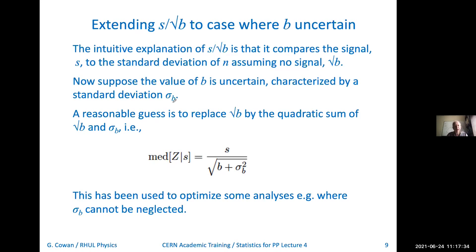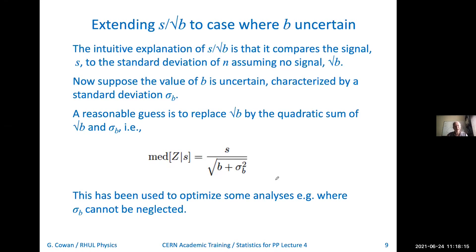Now suppose b itself is uncertain, characterized by an uncertainty sigma b. Since root b represents the statistical fluctuation in b, and then I have this other sigma b which is like my systematic uncertainty, you might think: just take the two things and add them in quadrature. Add the systematic and statistical uncertainties in quadrature, and use that in the previous formula. Then you would have s over the square root of b plus sigma b squared. This hand-wavy derivation has been used in the past with no more formal justification than what I just said — just generalizing the formula to use the quadratic sum of statistical and systematic uncertainties.